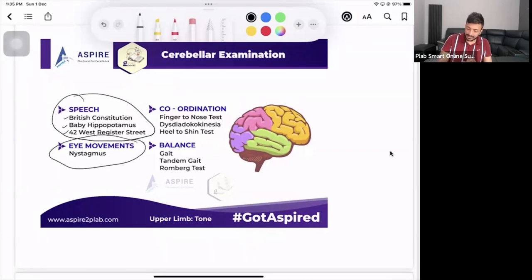Then the eye movement, you can check for nystagmus. Then for the coordination, you can check for finger nose test, dysdiadochokinesia, heel to shin test. Then you've got gait, tandem gait and the Romberg. Romberg sign will be quite helpful. You will be able to find out if it is cerebellar or if it is sensory ataxia by doing this Romberg test.